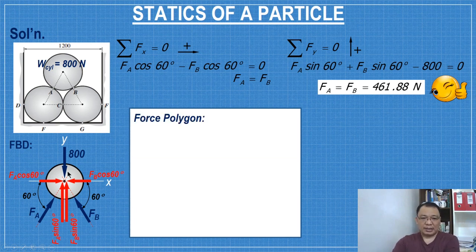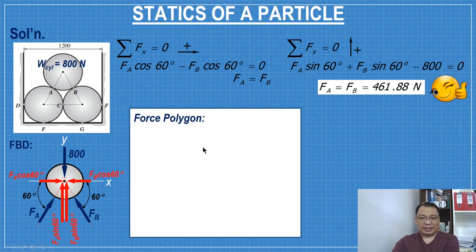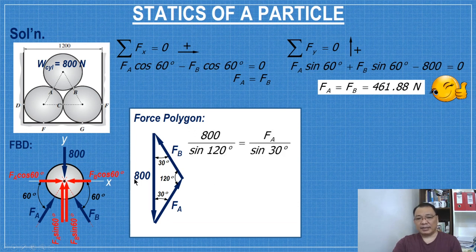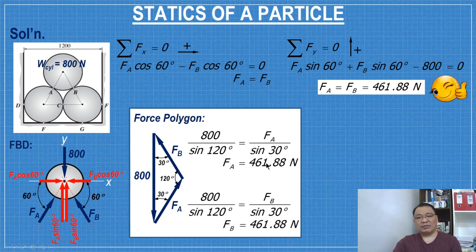Now, if you use force polygon for this, three forces without the red ones, 800, and then FA, FB. And since the direction of FA from the horizontal is 60 degrees, therefore the angle from the vertical is 30. Same also with FB, the direction is 60 degrees from the horizontal, so from the vertical it's 30 also. So 180 minus 30 minus 30, this angle is 120. And since it's oblique, you can use sine law. So 800 over sine 120, FA over sine 30. FB equals 461.88 newtons.